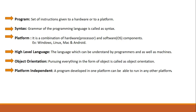Now we move to object-oriented language. What is object orientation? Pursuing everything in the form of objects is called object orientation. Why does Java pursue everything in the form of objects? Because whatever you see in this world is an object. To solve real-world physical problems, we have to interact with objects. That's why Java takes everything in the form of objects, and that process is called object orientation.